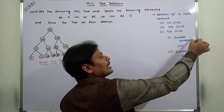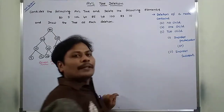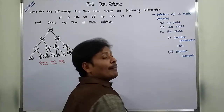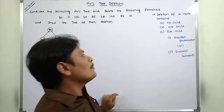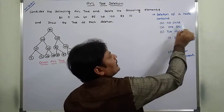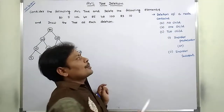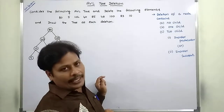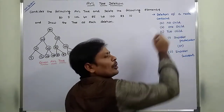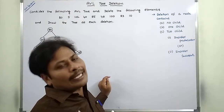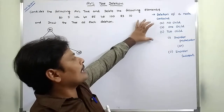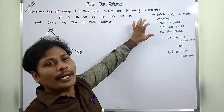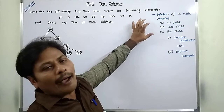So the deleted node can be replaced with the maximum element in the left subtree, or with the minimum element in the right subtree. If the deleted node has one child, that node can be replaced with either the left child or right child. If the deleted node has no child, we simply delete that node. These are the three cases we have to consider when performing a deletion operation on a node in the AVL tree.